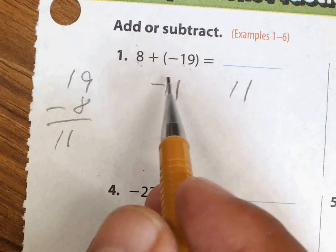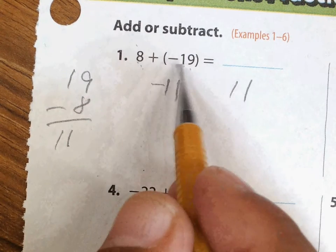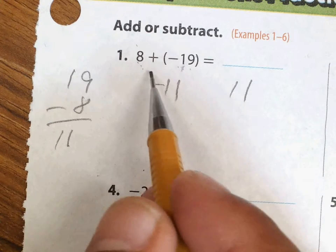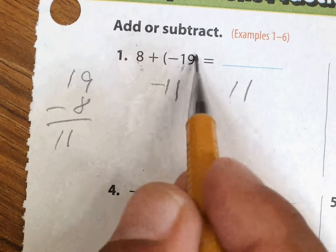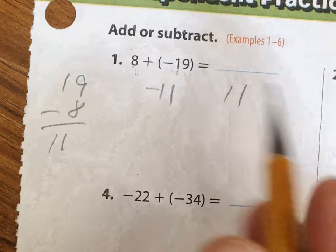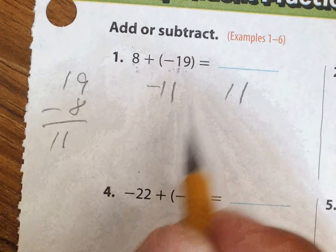In other words, whose absolute value is more? If you look there, you can tell that negative 19 is 19 places from zero and 8 is only 8 places, so this guy is further away from zero. So his absolute value is more, so the answer has to carry his sign and so my answer is negative 11.